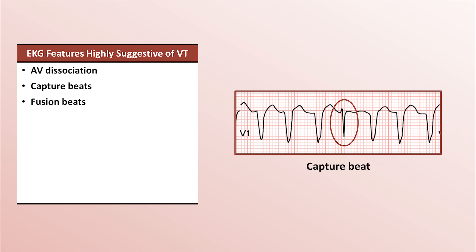While capture and fusion beats are particularly suggestive of VT, they can rarely be seen in SVT with aberrancy. For example, if a patient has an SVT with a pre-existing left bundle branch block and a PVC occurs within the left ventricle at the exact moment that the right ventricle is depolarized from the normally working right bundle branch, it can result in a single unexpectedly normal-looking QRS.